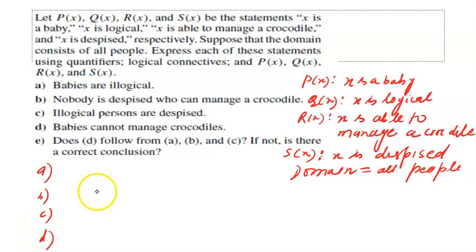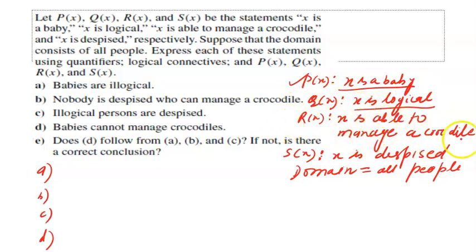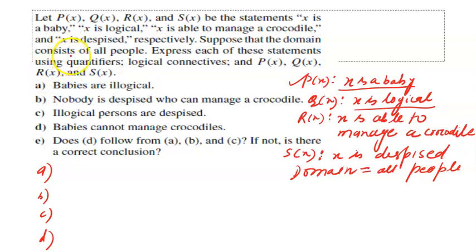Ladies and gentlemen, the next problem: let P(x), Q(x), R(x) and S(x) be statements. P(x): 'X is a baby.' Q(x): 'X is logical.' R(x): 'X is able to manage a crocodile.' S(x): 'X is despised' — despised means something you look down upon. The domain contains all people. We have to translate these statements using quantifiers, logical connectives, and the defined predicates.